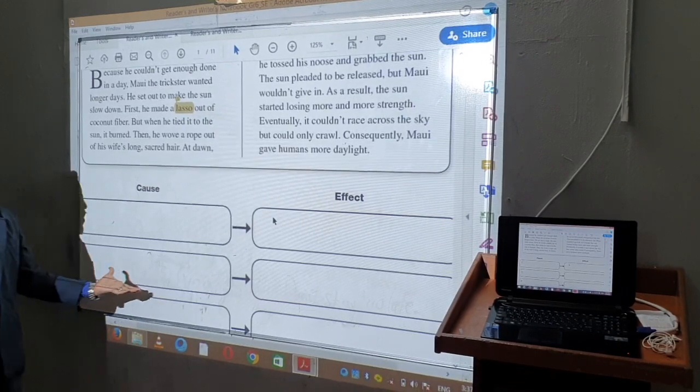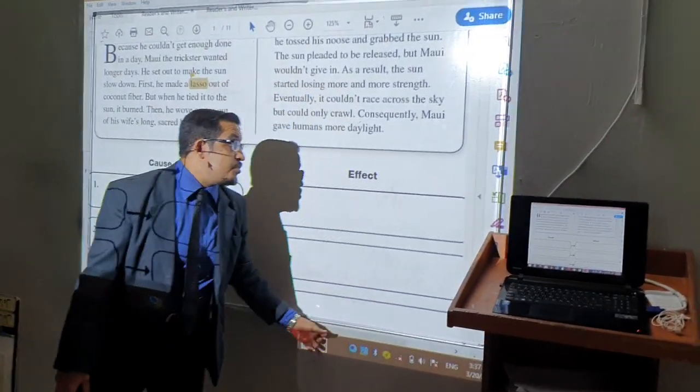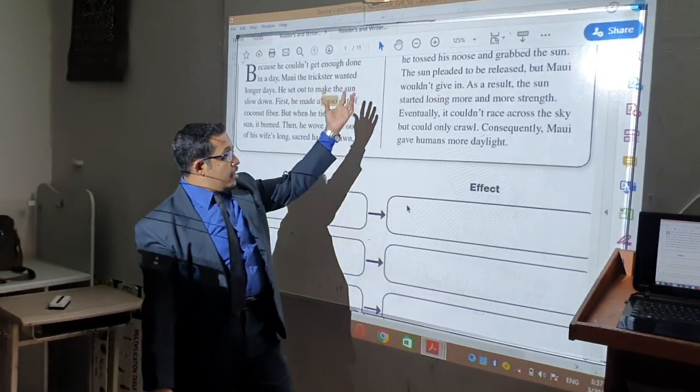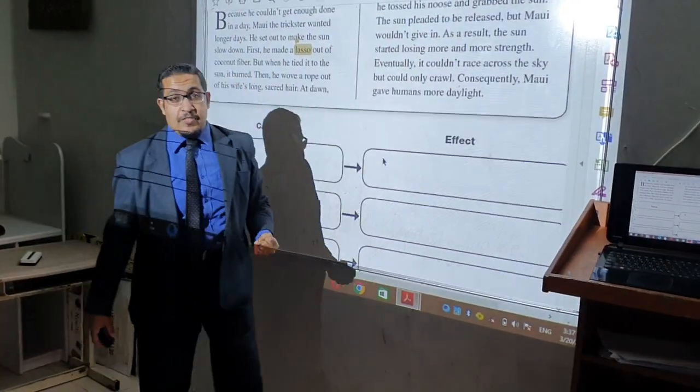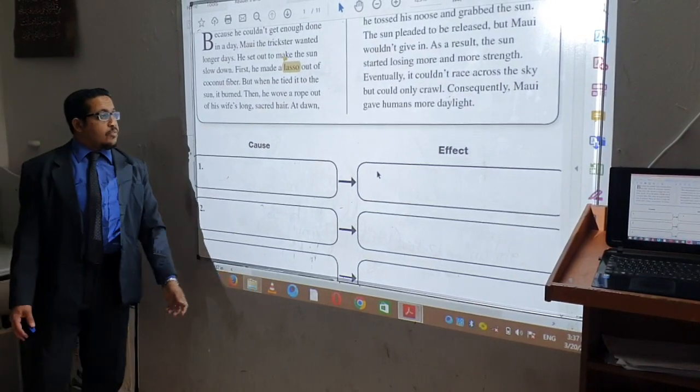So the sentence of effect that we can write? Yes, the sun started to lose its power. Why? Because Maui wouldn't let it move. This is the part of cause and the effect.